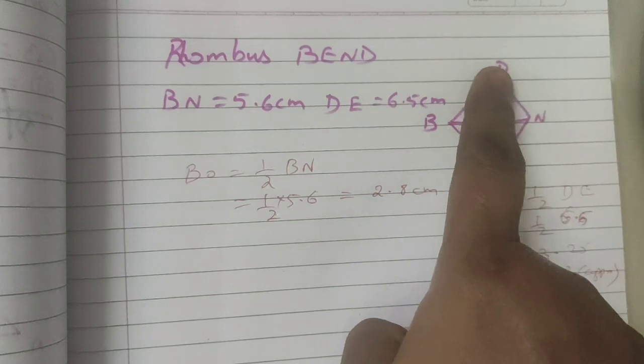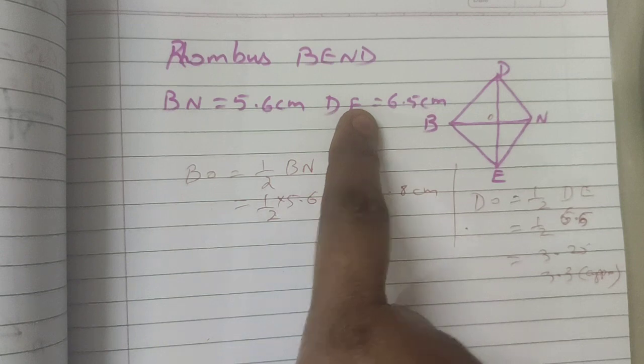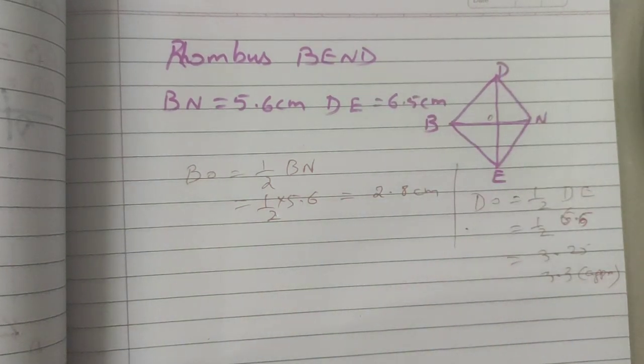Rhombus, all the 4 sides are equal. But here side measurement they did not give. They have given diagonal measurement.